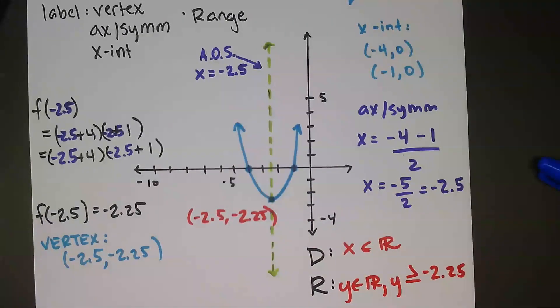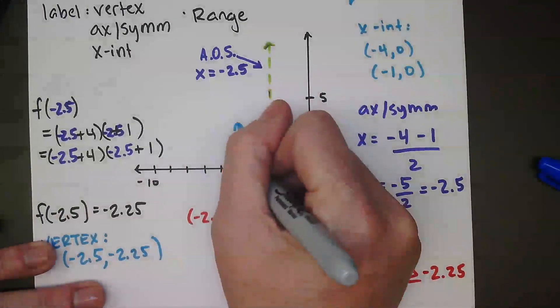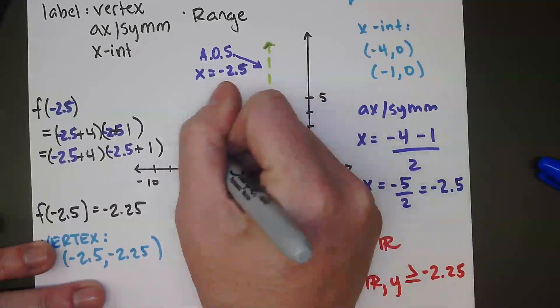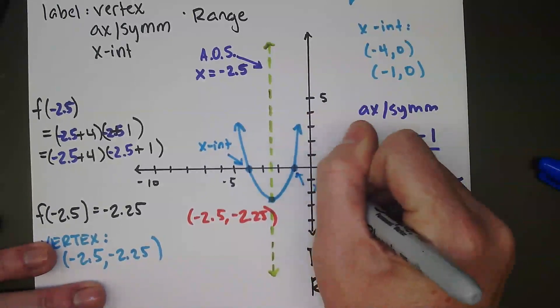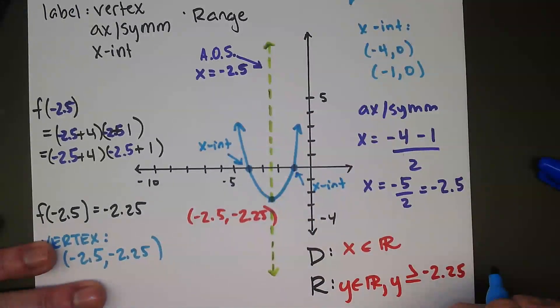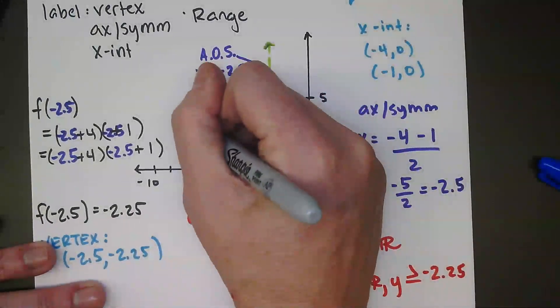And that's everything they asked for. The vertex, the axis of symmetry, the x-intercepts. It did ask to label this stuff, so maybe I can label this as an x-intercept. This is also an x-intercept. It is the x-intercept, negative 4, 0.